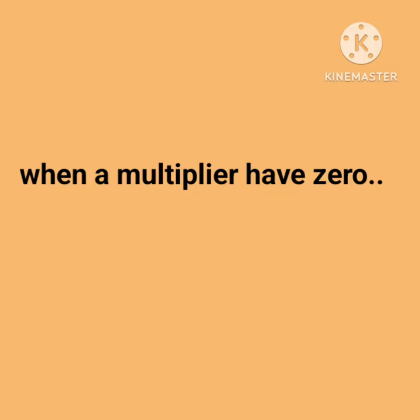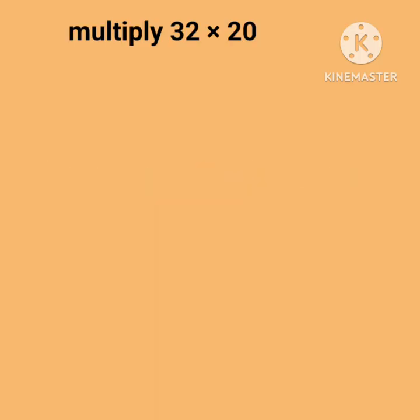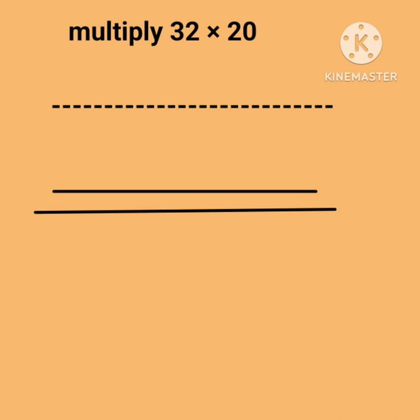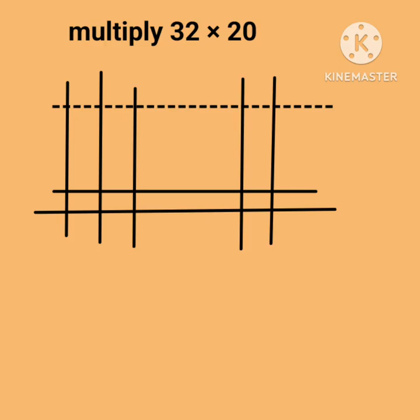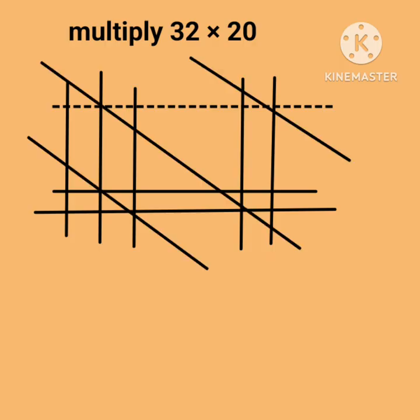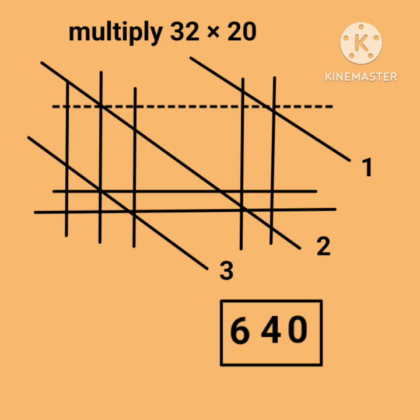Now we take an example containing a zero. Multiply 32 by 20. Draw 0 as a horizontal dotted line, then draw 2 more horizontal lines. Now draw 3 vertical lines first, then draw 2 more vertical lines. Counting points of intersection according to the diagram: the first line shows no points of intersection — dots as intersections with the 0 line will not be counted. The second line shows only 4 points of intersection. The third line shows 6 points only. Hence the final answer is 640.